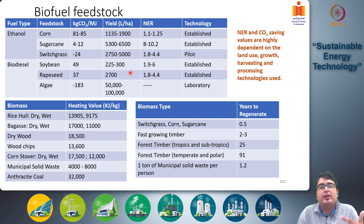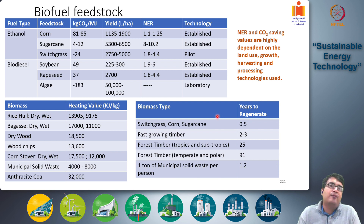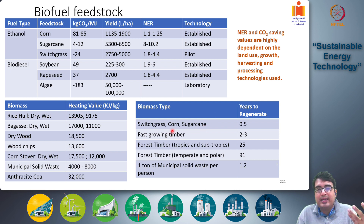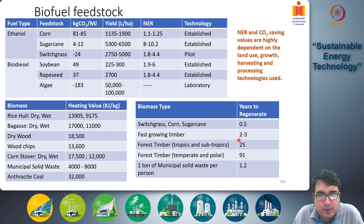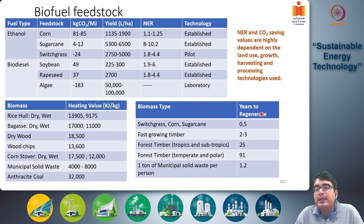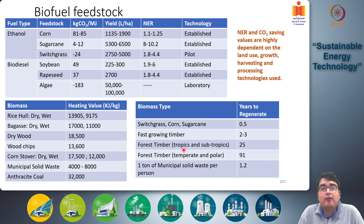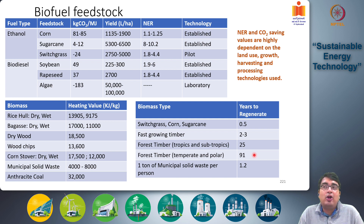Another sustainability aspect is how long it takes for the biofuel feedstock to grow and regenerate. Grasses and fast-growing crops like sugarcane, corn, and switchgrass take about half a year to regenerate, while fast-growing timber used in the timber industry takes two to three years. These can be considered sustainable crops for biofuel production. However, forest timber with high regeneration times of 25 years or 91 years cannot be considered sustainable.